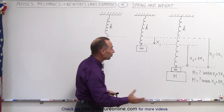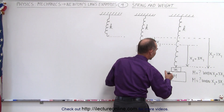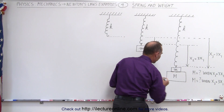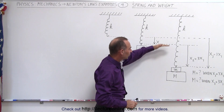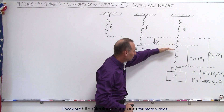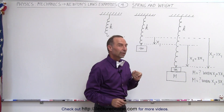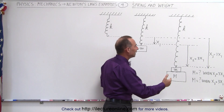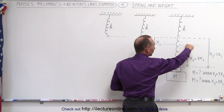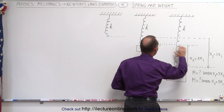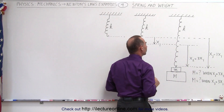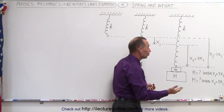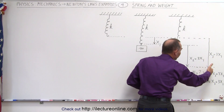Then when we attach an additional mass to that — we'll use some strong glue between the two — you can see the spring will then elongate even more. Sometimes the problem is worded such that the additional distance, let's call it x2, is three times the original distance x1.